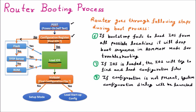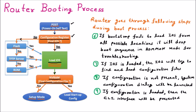Step eight: if the configuration file is not present in NVRAM, the system configuration dialog will be launched — this is setup mode, where the configuration dialog executes because no configuration files were found. Step nine: if the configuration file is present in NVRAM, the CLI — command line interface — will be provided so that the human operator can work on the router.